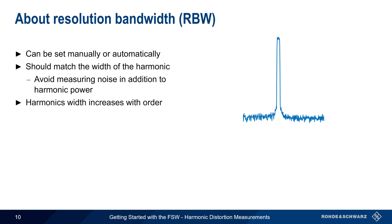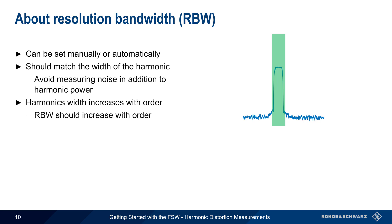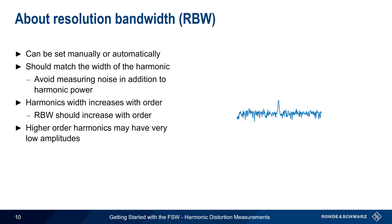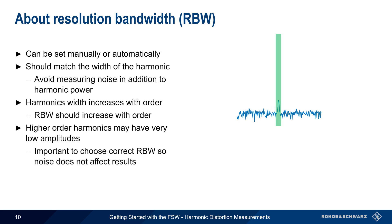Another thing to keep in mind is that harmonic width increases with increasing harmonic order. For example, the third harmonic of a signal is usually three times wider than the fundamental. Therefore, the resolution bandwidth should also be increased with increasing harmonic order. And finally, remember that higher-order harmonics may have very low amplitudes, and in this case it's particularly important to choose a resolution bandwidth such that noise does not affect the results.